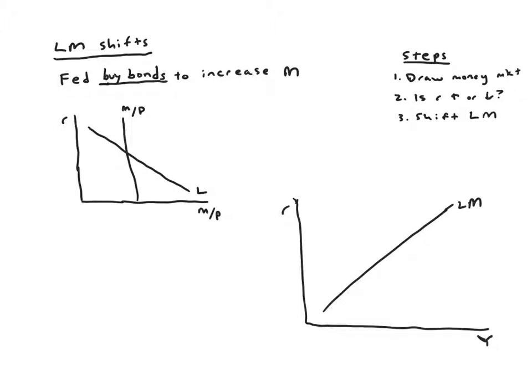Right here's my initial LM relates r and Y and now we can think about how it's going to shift. So the starting point will be draw the money market, that's our building block we use to build up our LM curve. We have our initial equilibrium, I'll label it point A.